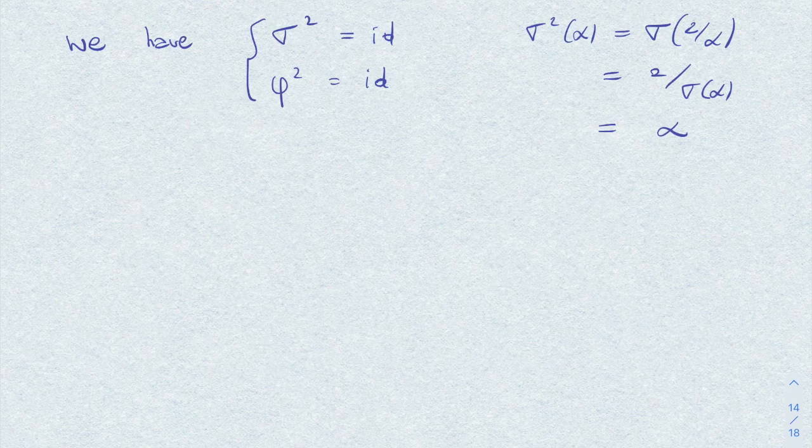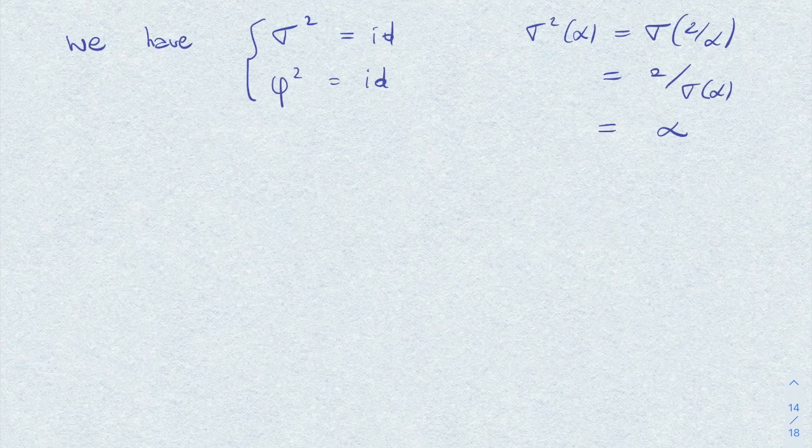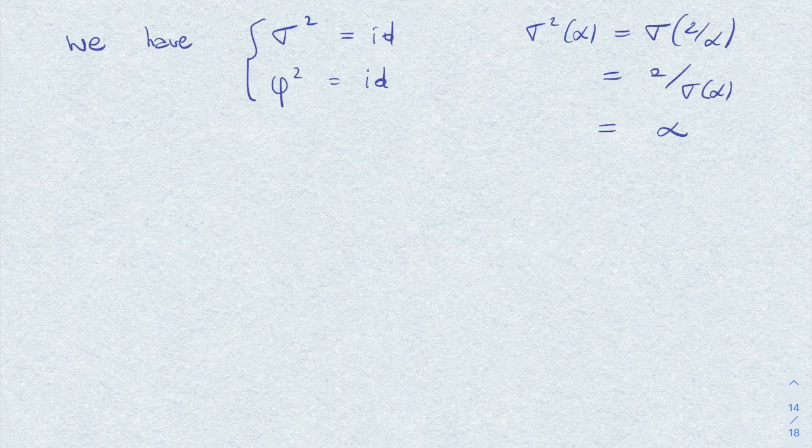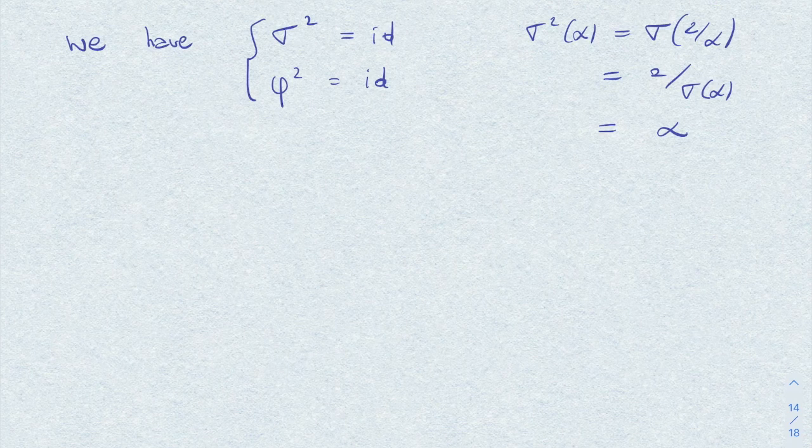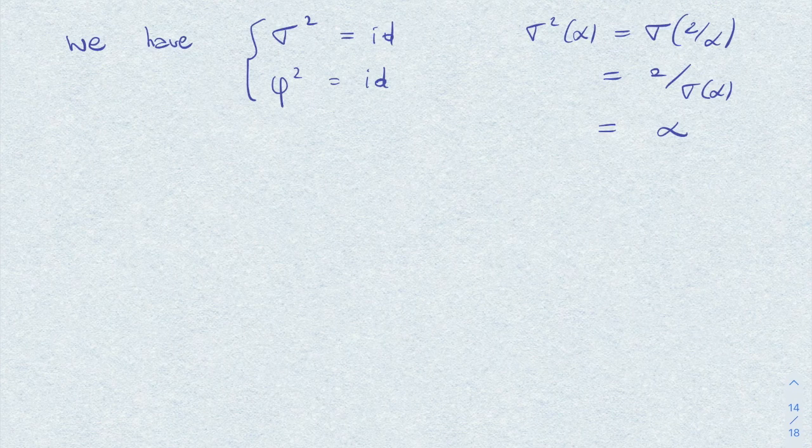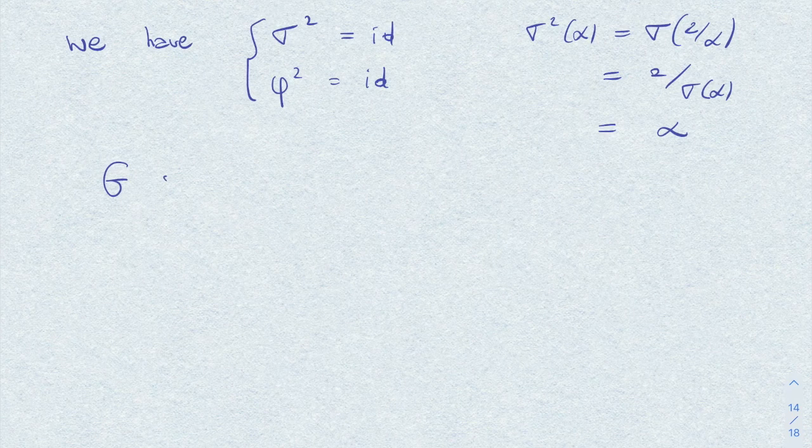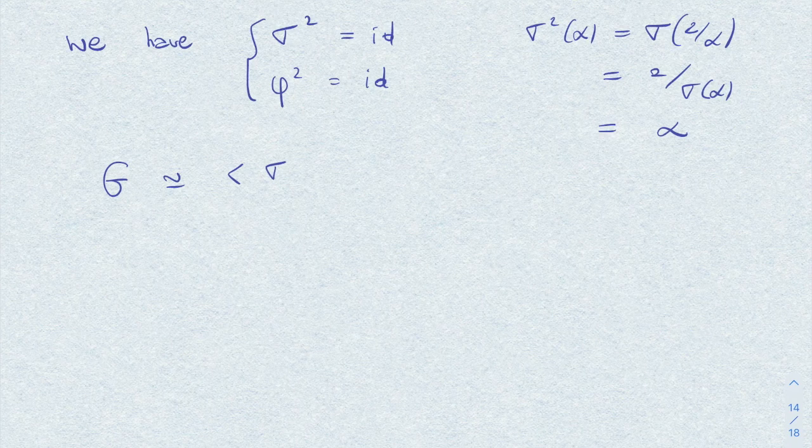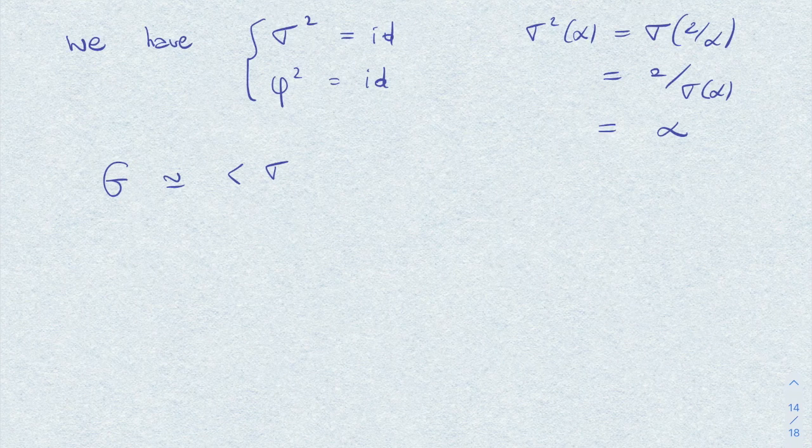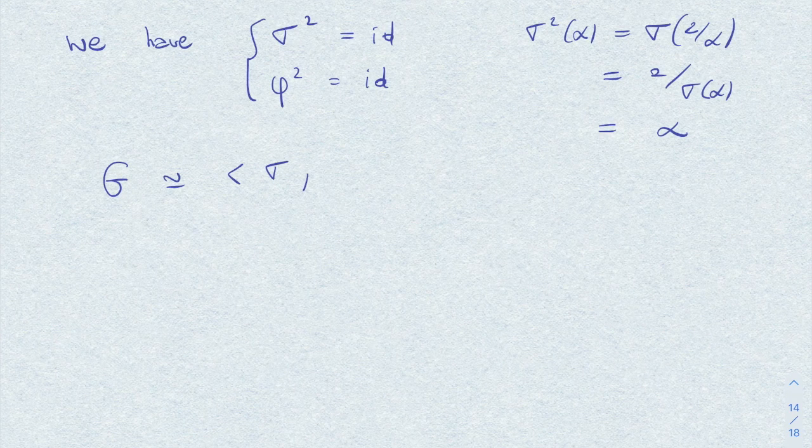So this is enough to conclude that G contains these two elements, and therefore is generated by these two elements, since the order of G is at most 4.